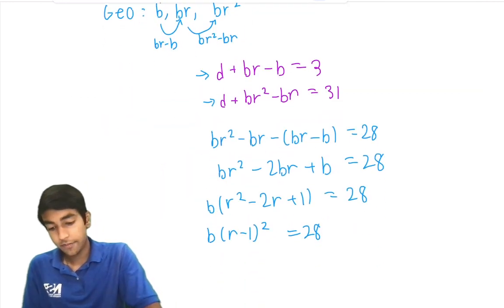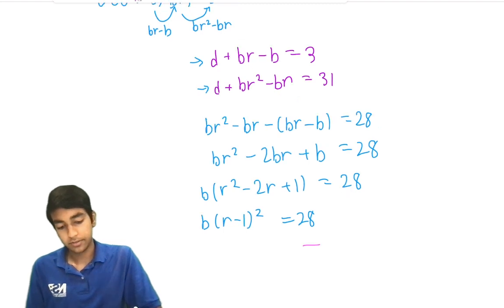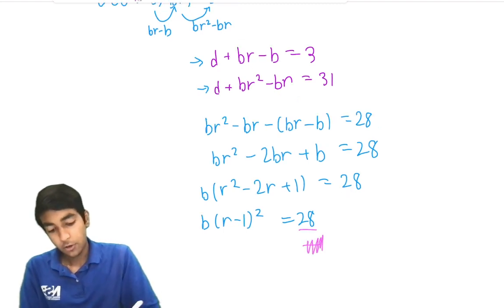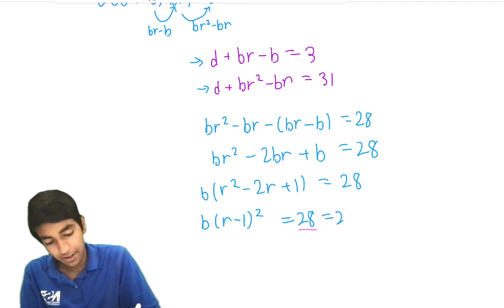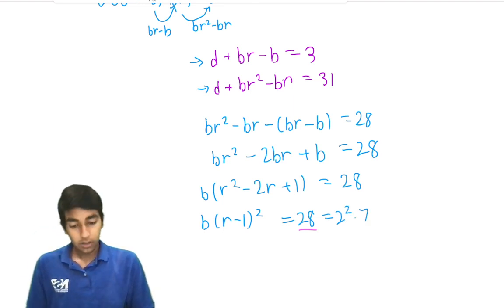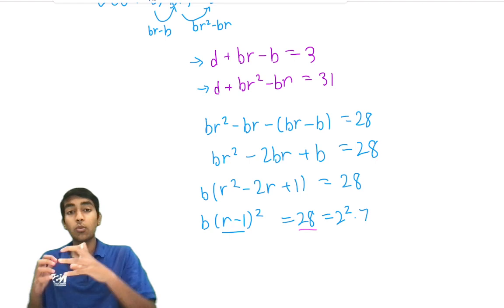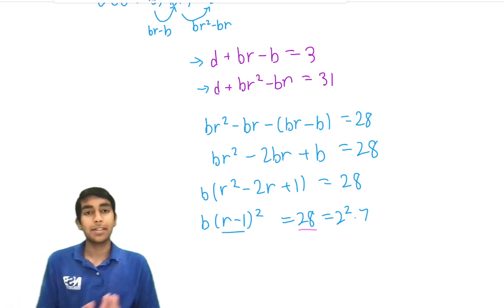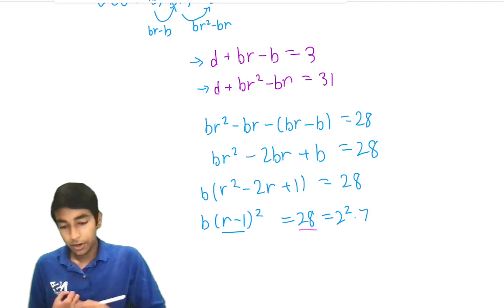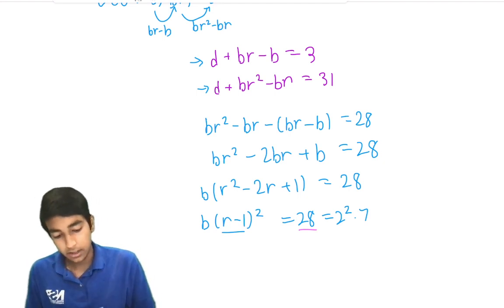So now let's just consider the factors of 28. 28 is 2 squared times 7. So r minus 1 squared, it's a square number and it's a factor of 2 squared times 7. What are the only square factors of 28?